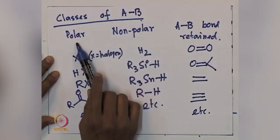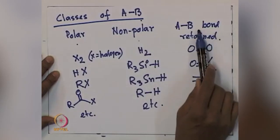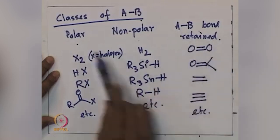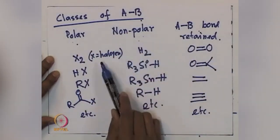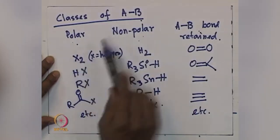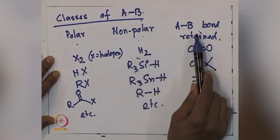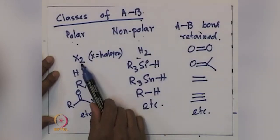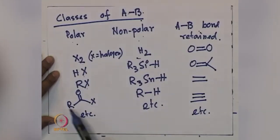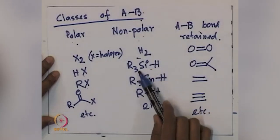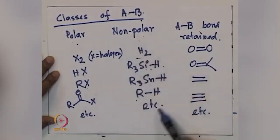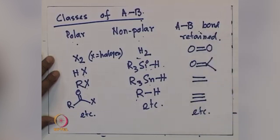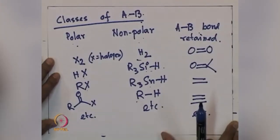A-B bond can be retained during oxidative addition if it is O₂, a carbonyl, an olefin, or an alkyne. So three different classes of A-B are possible: polar, non-polar, or A-B where at least one bond is retained after oxidative addition. In the polar and non-polar cases, the bond between A and B is broken, but in the multiple-bond cases, at least one bond is retained.